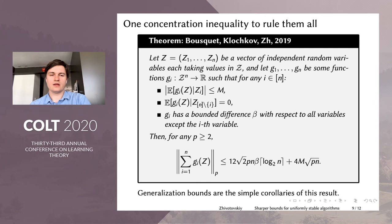And our result is the following general concentration inequality. So we proved the following. Assume that Z is a vector of n independent random variables. And assume that we are given n functions. The number of functions is the same as the number of random variables. And this function satisfies the following three properties. The first one is that if we take the expectation with respect to all except the i-th random variable, then the given this random variable is bounded by capital M with probability one. If we take the expectation with respect to only the i-th variable, then this expectation is equal to zero. We also assume that these functions g_i all have the bounded difference property with parameter β with respect to all variables except the i-th variable. Then for any p greater than two, the moment of the sum of these n functions satisfies the following upper bound. So there are two terms. One of them scales linearly with p, which corresponds to the subexponential regime. And the second scales as √p, which corresponds to the sub-Gaussian regime.